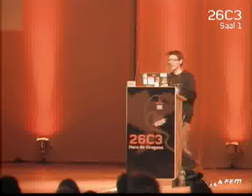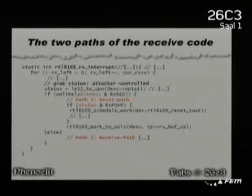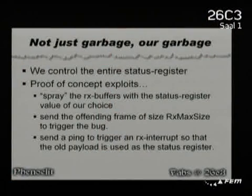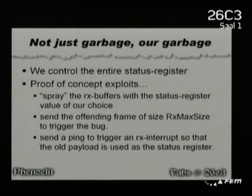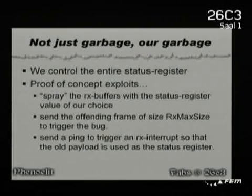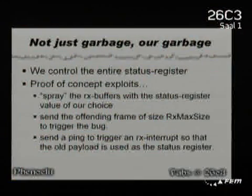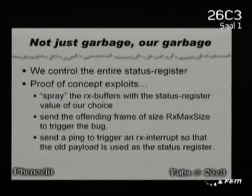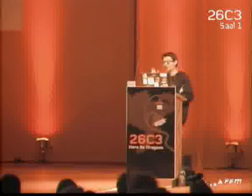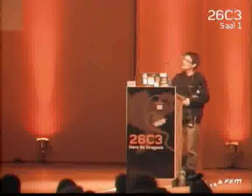There's one path which is the reset path — when you hit it, everything goes back to normal. When you hit the receive path, some junk is handed upward instead of the packet which actually arrived. Since we control the status register, we start writing proof-of-concept exploits which basically spray the RX buffers with some value so that it is then transferred into the status register. Then we send the offending frame — the frame with a length of RX MUX size — and then send a ping to get an RX interrupt triggered so this is actually handed up.